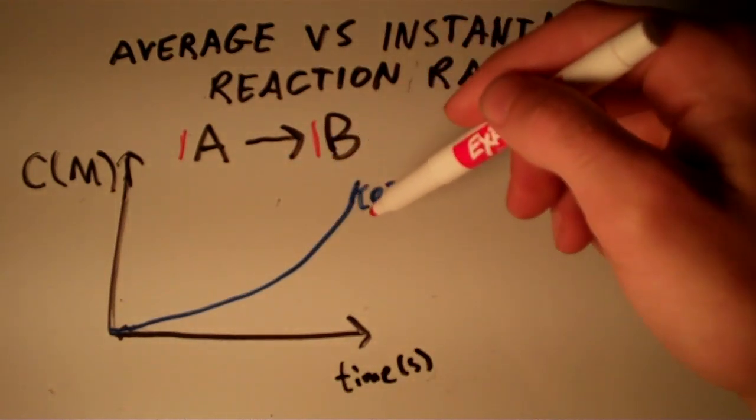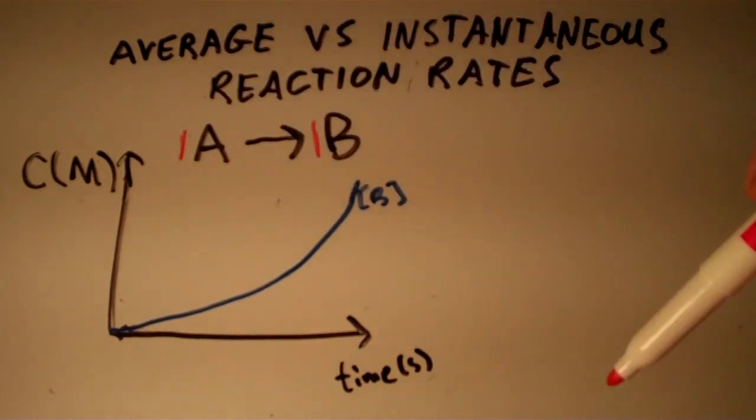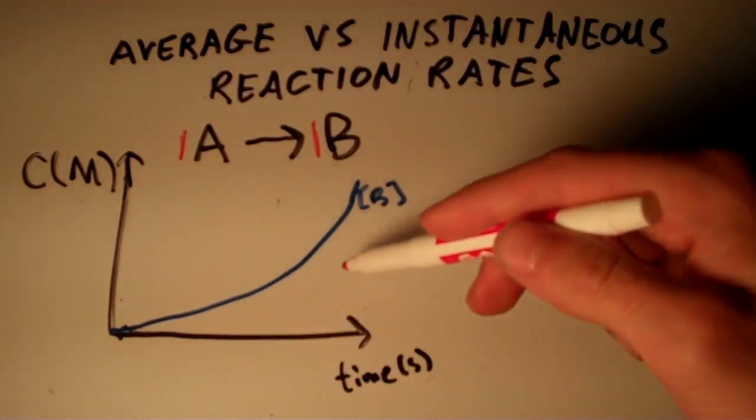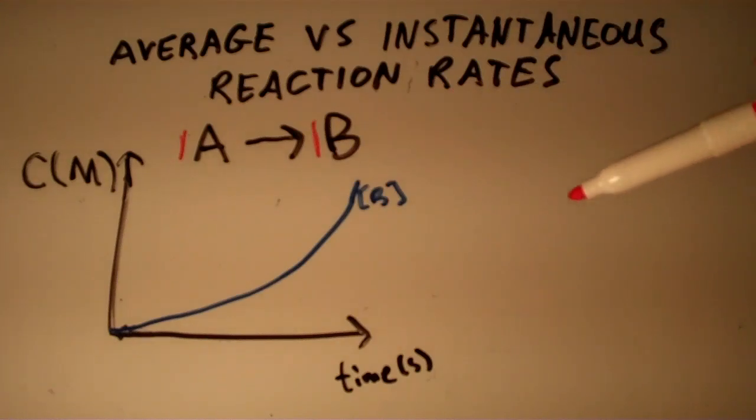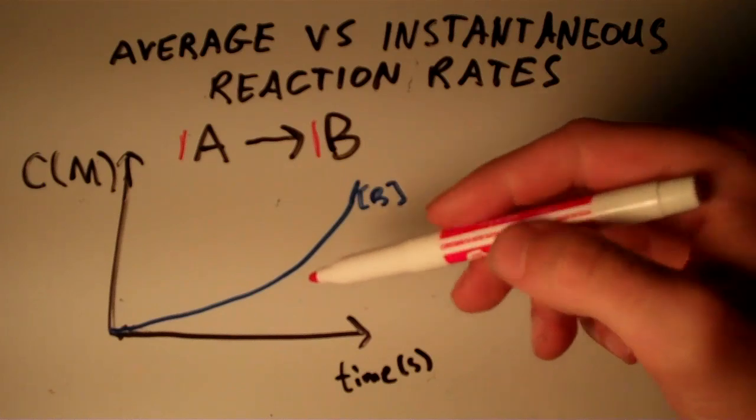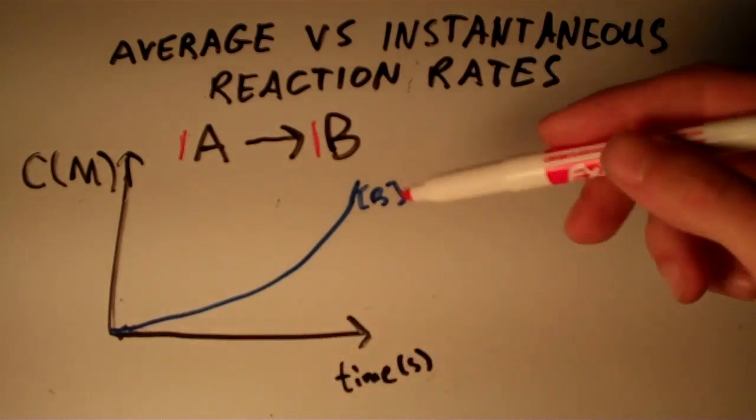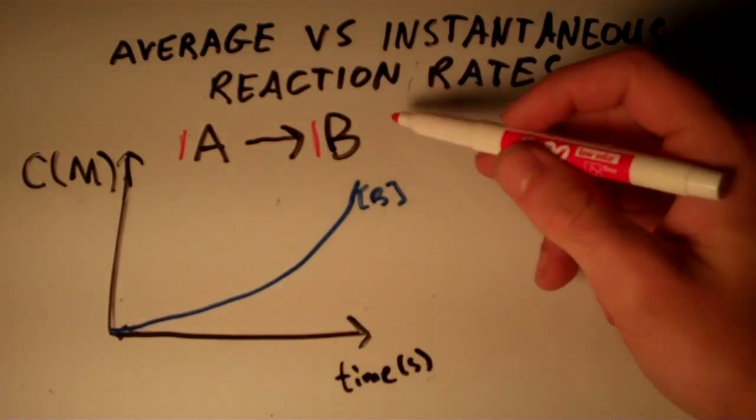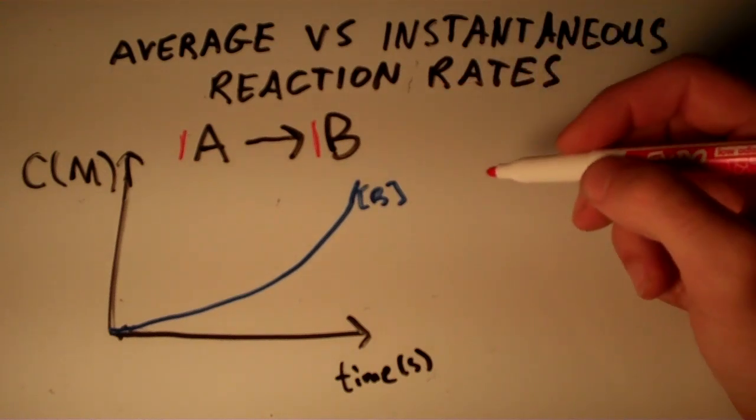This blue curve here is a concentration versus time curve that shows the concentration of B over time. It looks like it makes sense because it's increasing as the reaction proceeds, which of course makes sense because B is a product, not a reactant.